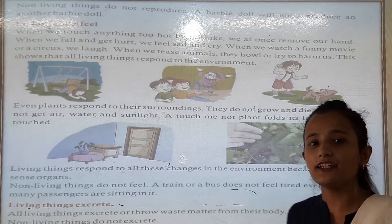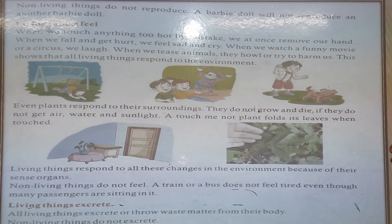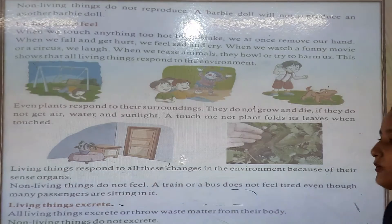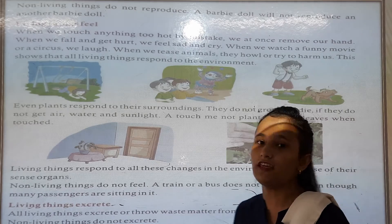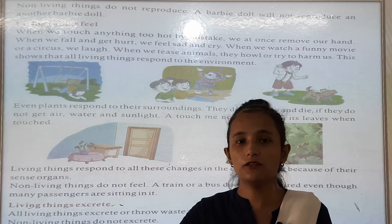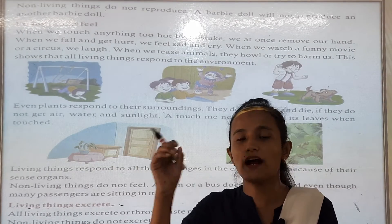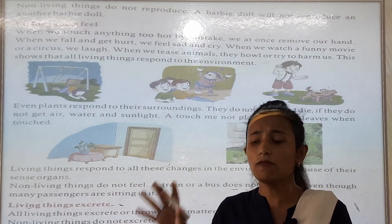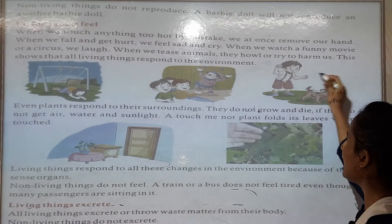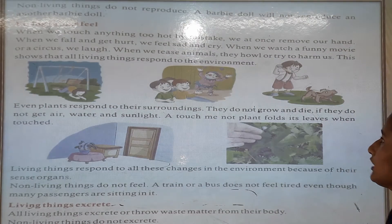These are the feelings that we can feel. Living things can feel, but non-living things cannot feel. When we tease animals, they try to harm us. For example, if you tease a dog, the dog will bark back at you — it barks and reacts. These are the feelings that animals have.